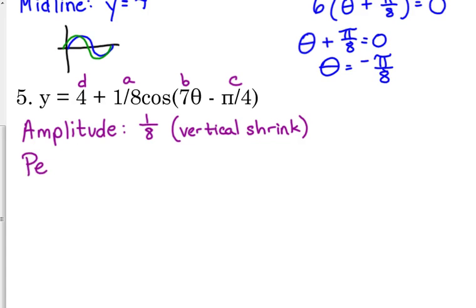Period, 2π divided by b, 7. That one doesn't reduce. So we're done. That is a horizontal shrink. Our period went from being 2π to 1/7 of that. So it's a whole lot tighter horizontally.